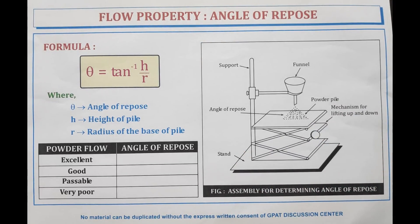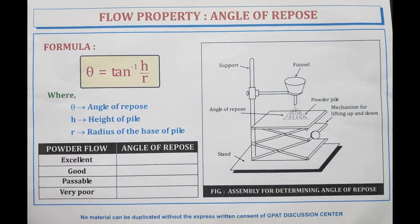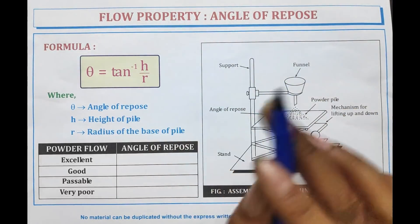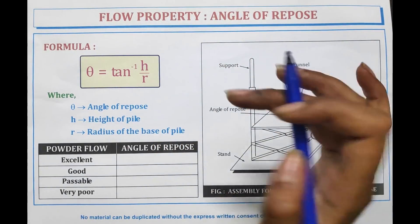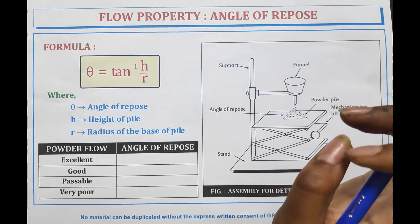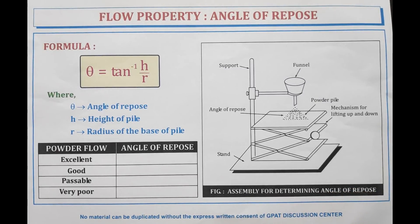Welcome to GDC. In this video we will be discussing flow properties and their measurement. Flow property, or flowability, is defined as the ability of a powder to flow in a desired manner in a specific piece of equipment. Flow of powder may be of two types: free flowing and non-flowing. Non-flowing is also known as cohesive.